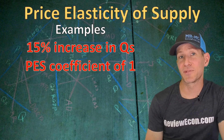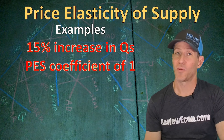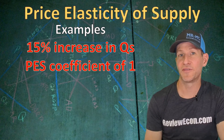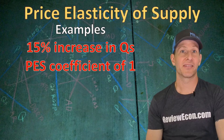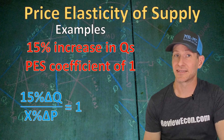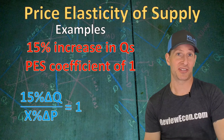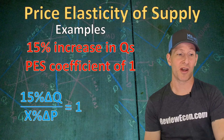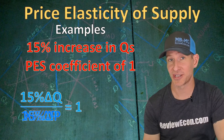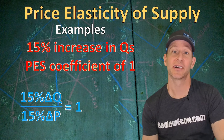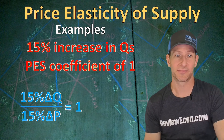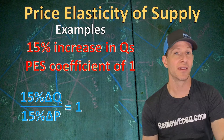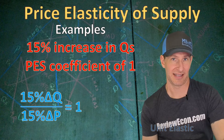If instead we had a 15% change in quantity supplied and a price elasticity of supply coefficient of 1, we plug in the known numbers and solve for the percentage change in price. A 15% change in quantity divided by a 15% change in price gives us an elasticity coefficient of 1. Since the price elasticity of supply coefficient is 1, this supply curve is unit elastic.